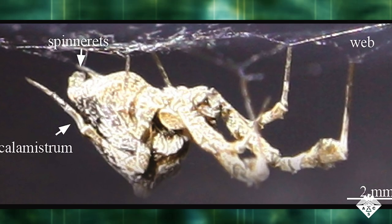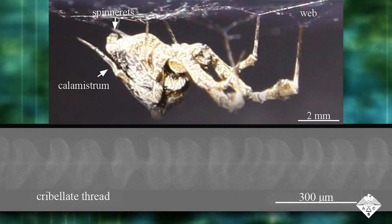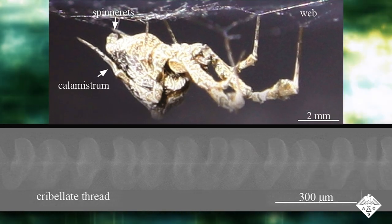Unlike the silk from most spiders, which is coated in a sticky glue, the threads from cribellate spiders resemble a bristly wool that embeds into the bodies of their prey.